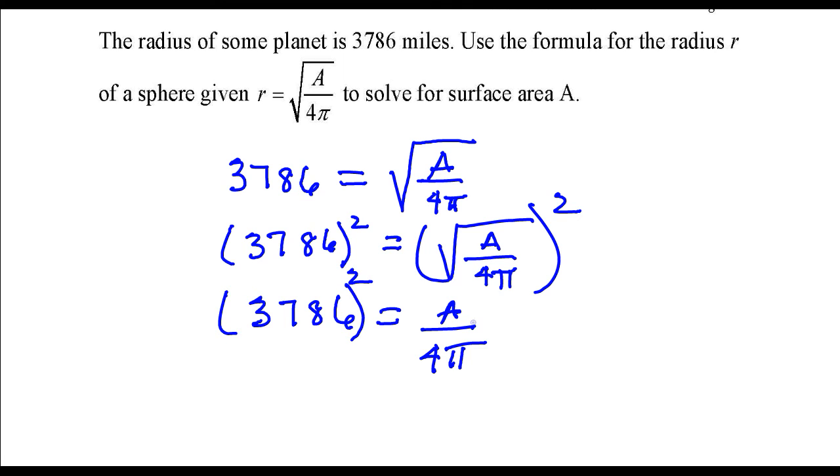If I want to solve for A, which is the surface area, I'm going to need to multiply both sides by 4π. So in this case, A is 4π times 3,786 squared.